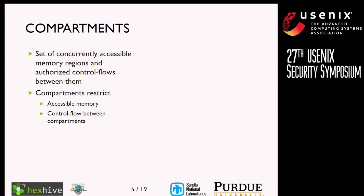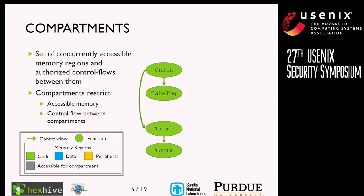A compartment is a set of concurrently accessible memory regions and authorized control flows between them. In our compartments, we restrict access to memory and control flows between compartments. Here I've depicted a small part of a program with four functions — on button, take image, TX image, and TCP TX — with control flow or calls between those functions.